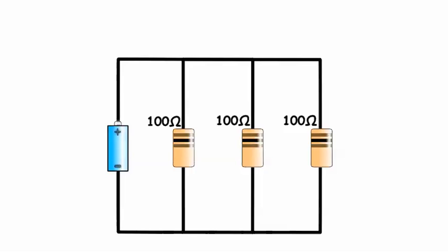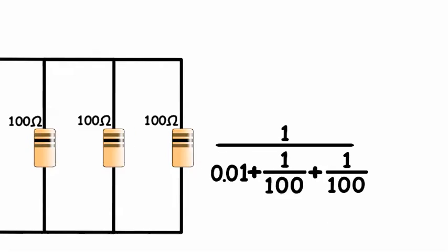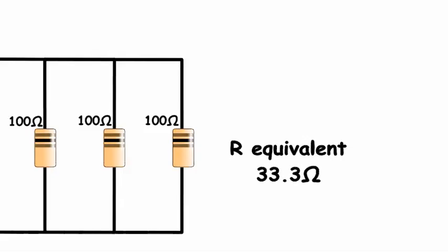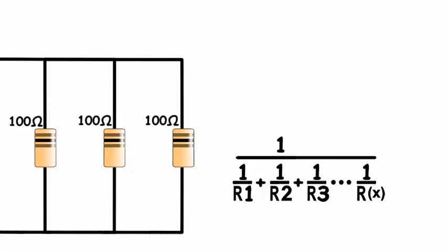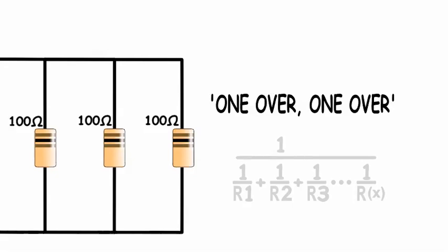For parallel resistors, that is resistors that follow different current paths to ground, we can take the reciprocal of each resistance, add them together, and take the reciprocal of the sum. This is known as the 1 over 1 over method, and it can be used for any number of parallel resistors.